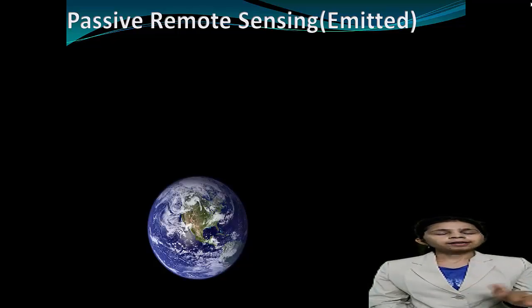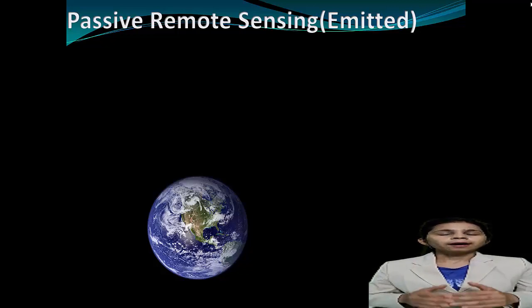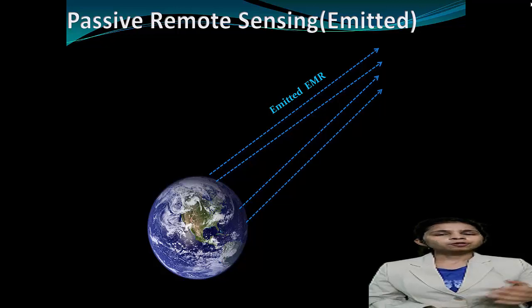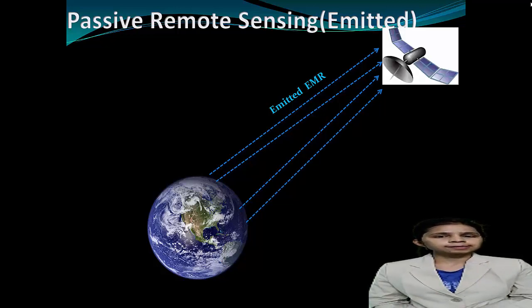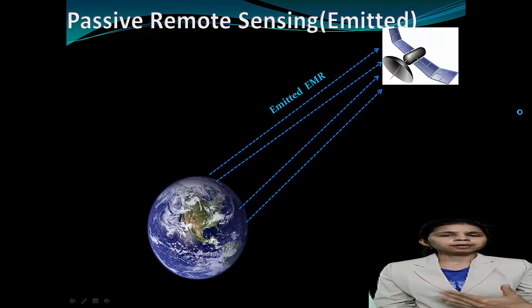But at night, the sun is not there, so sun's energy is not available. Then how do we record electromagnetic radiation? We use passive remote sensing due to emitted light. Here, objects like land and sea which are heated by sunlight during daytime emit heat at night — heat is nothing but infrared radiation. Or if there is a fire in the jungle or a volcanic eruption, enormous amounts of heat, which is infrared radiation, are emitted. This emitted infrared radiation can be detected by sensors on satellites, sent back to receiving stations on earth, and after analysis, the information is available to us.